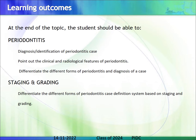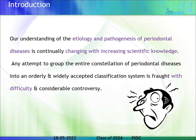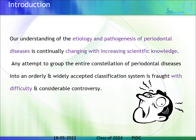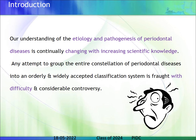Coming to staging and grading, you should also be able to differentiate the different forms of periodontitis case definition system based on staging and grading. Our understanding of the etiology and pathogenesis of periodontal disease is continually changing with increasing scientific knowledge. Any attempt to group the entire constellation of periodontal disease into an orderly and widely accepted classification is fraught with difficulty and considerable controversy.